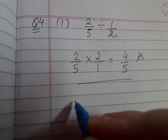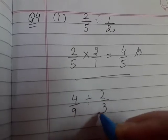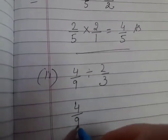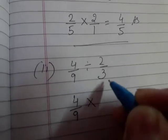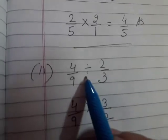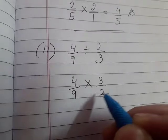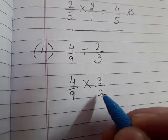Now next part: you have four by nine divided by two by three. So how do we do it? Four by nine - instead of divide, we multiply. Then we write the reciprocal. Two by three becomes three by two. After divide, we use the reciprocal. Clear?